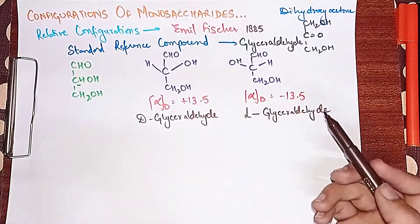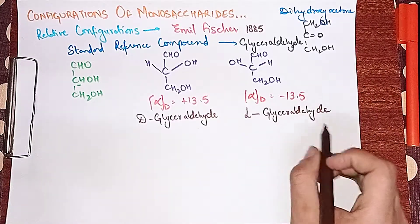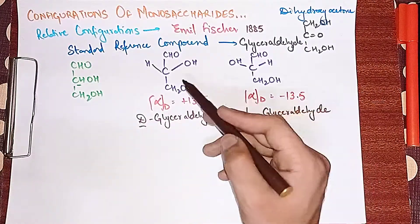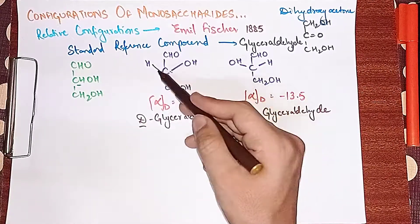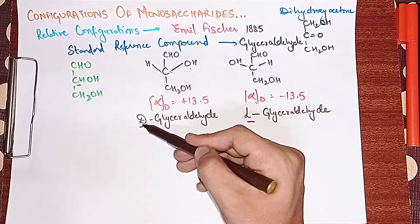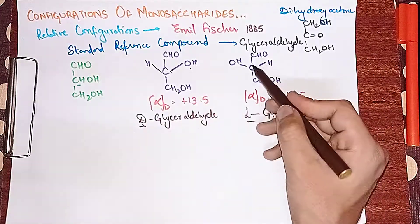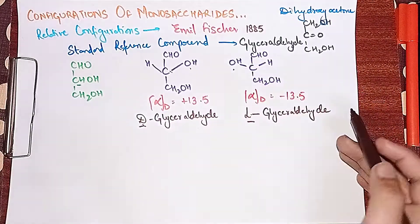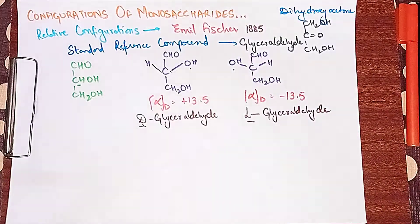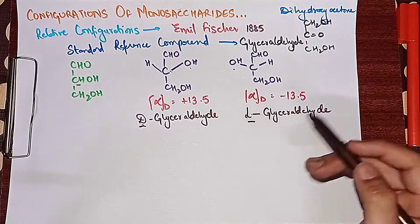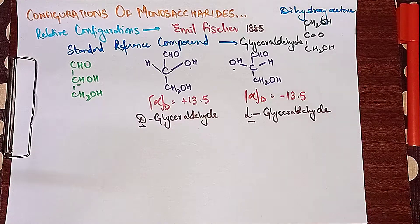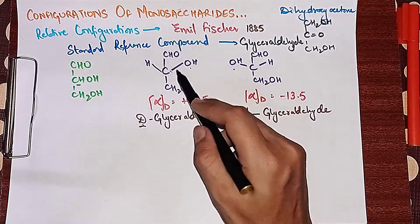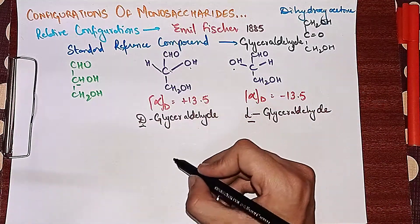For different compounds like glucose and fructose, we assign D or L based on the second last carbon atom — that is, the second carbon from the bottom. If that carbon's OH is on the right, we use the D sign; if its OH is on the left, we use the L sign. That is the main rule behind naming configurations of monosaccharides.